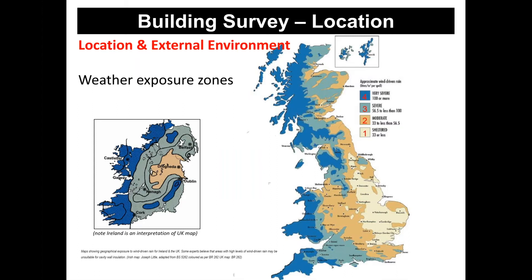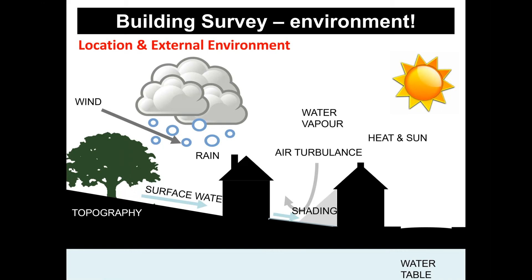We need to understand where the building is located, as that has a huge bearing on its performance and what we can do to it. For example, my university in Swansea, South Wales, is only 200 miles from London, but Swansea receives four times as much rainfall annually compared to London — that's the stark difference between weather exposure zones. We must also understand the environment around the building: is surface water running to or away from the building? Are tree roots damaging foundations or providing shelter? Wind helps dry out the building fabric, but heavy wind-driven rain is not so good. All these issues need to be understood properly as part of the building survey.